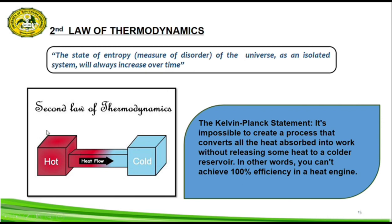Looking at this image, the second law of thermodynamics shows that heat flow goes from hot and transforms into cold. We have the Kelvin-Planck statement, which states that it is impossible to create a process that converts all the heat absorbed into work without releasing some heat to a colder reservoir. In other words, you cannot achieve 100% efficiency in a heat engine.